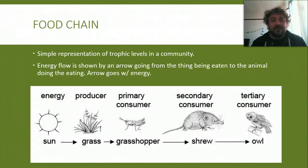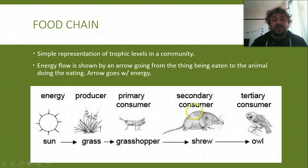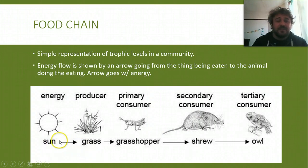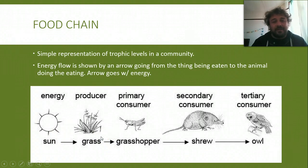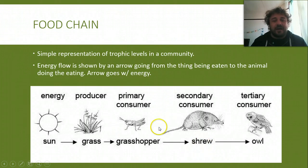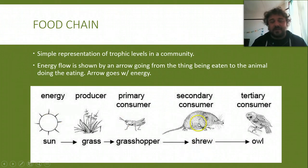Food chain — two words, by the way — it's basically a simple representation of these trophic levels, and the energy flow is shown by an arrow pointing from the thing being eaten to the thing doing the eating, so the arrow goes with energy. Here we go: grass gets eaten by the grasshopper, which then gets eaten by the bush rat, which then gets eaten by the owl.